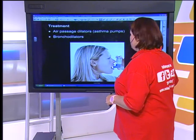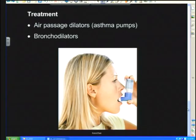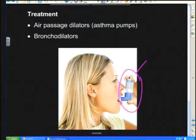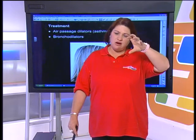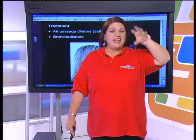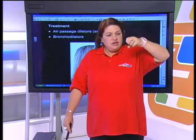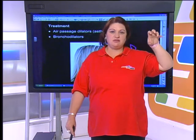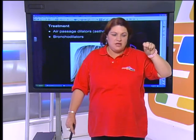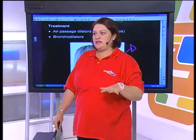The treatment for asthma is a bronchodilator inhaler — what's called a pompy. It contains cortisone and a muscle relaxant. When you breathe it in, it opens the airways and causes the muscles to relax so they don't spasm, allowing you to breathe easier.